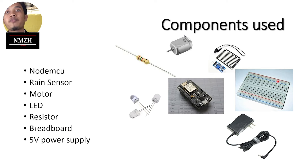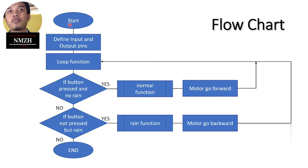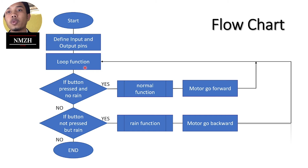Moving to the flowchart: as we start the code, we define the input and output pins so the NodeMCU knows where the inputs and outputs are. Then we go to the loop function. In the loop function, if the button is pressed and there is no rain, it goes to the normal function, which tells the motor to go forward.